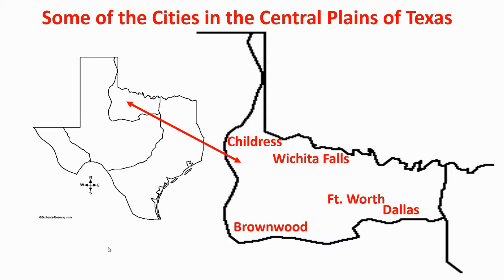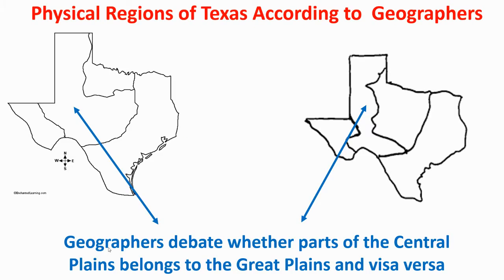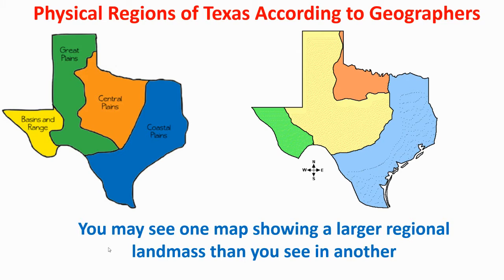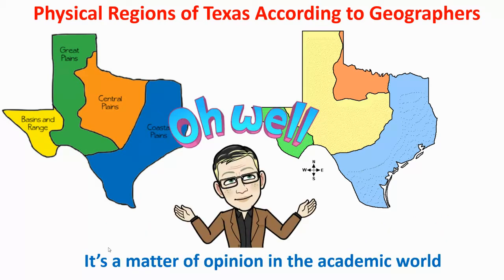Some of the cities in the central plains of Texas include Childress, Wichita Falls, and Brownwood. Of course, the Metroplex — which includes Fort Worth and Dallas — are the largest cities within this region. Geographers debate whether parts of the central plains belong to the Great Plains and vice versa, as you can see in the maps. You may see one map showing a larger regional landmass than another. It's a matter of opinion in the academic world.